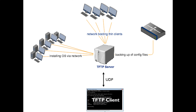Data transfer for TFTP is initiated through port 69. However, the data transfer ports are selected by the sender and the receiver when the connection is initialized.